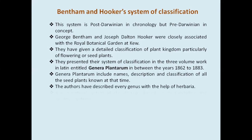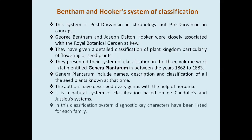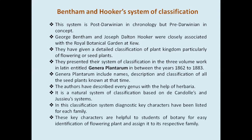The authors described every genus with the help of herbaria. It is a natural system of classification based on the de Candolle and Jussieu system. In this classification system, diagnostic key characters have been listed for each family. These key characters are helpful to students of botany for easy identification of flowering plants and assigning them to their respective family.